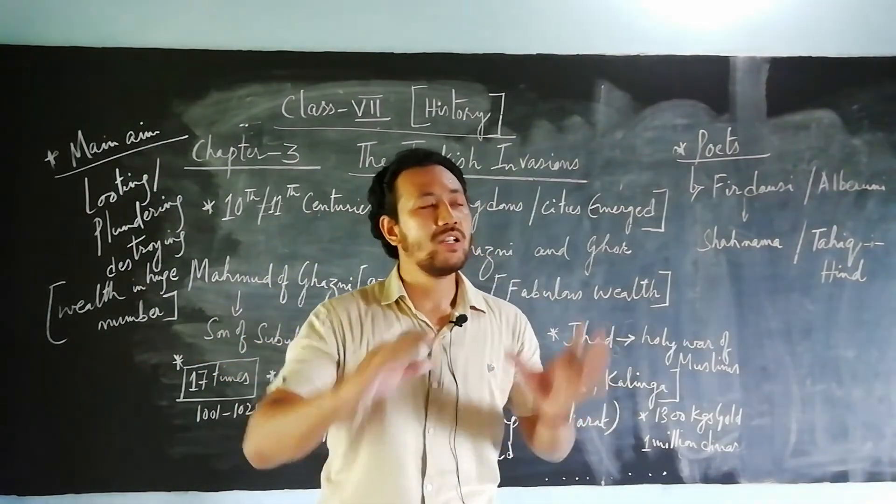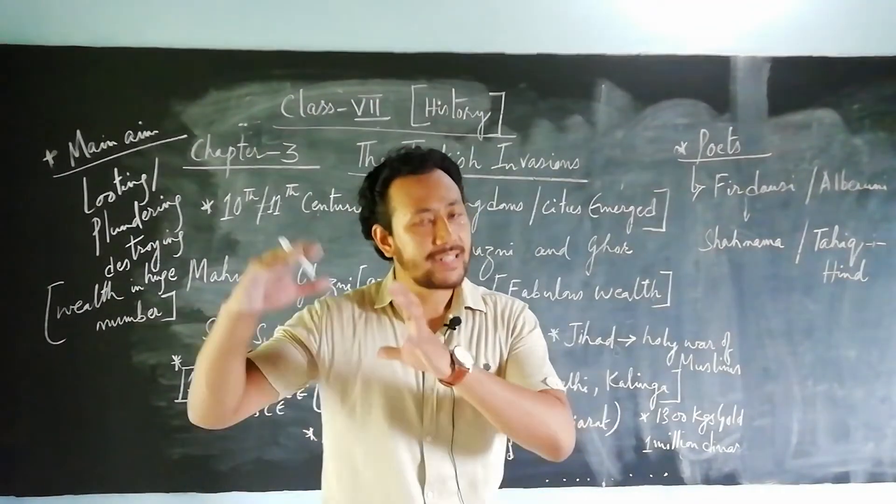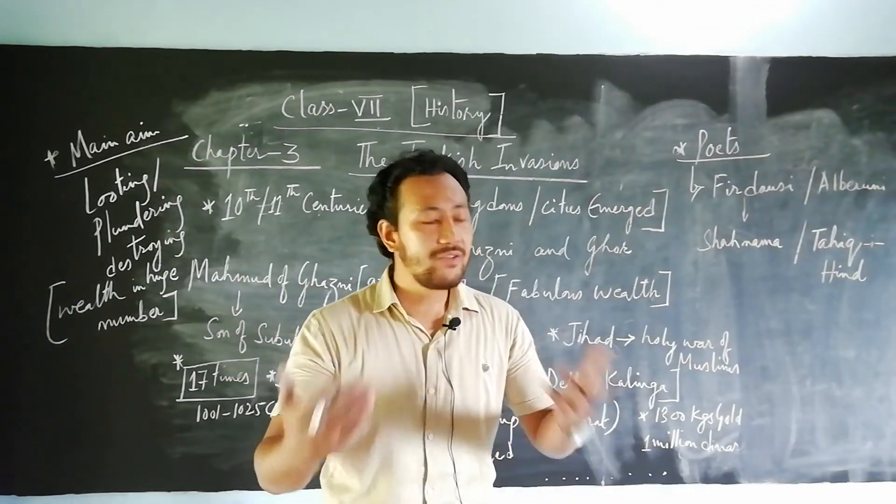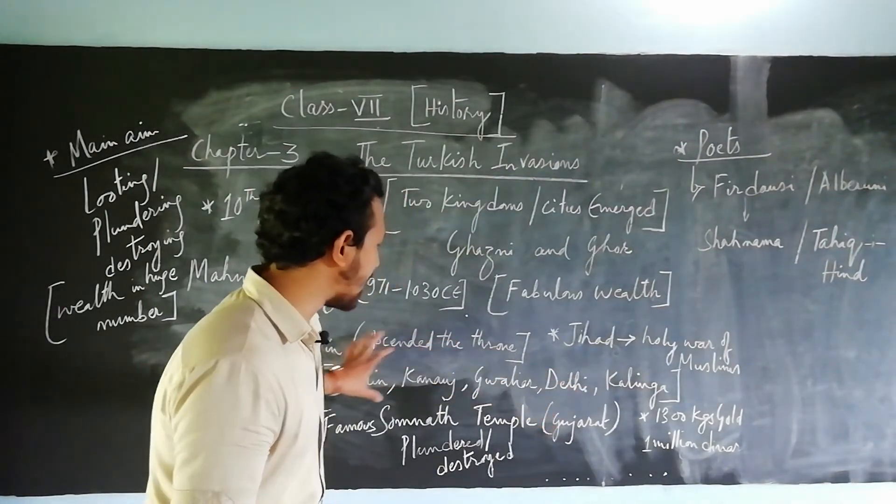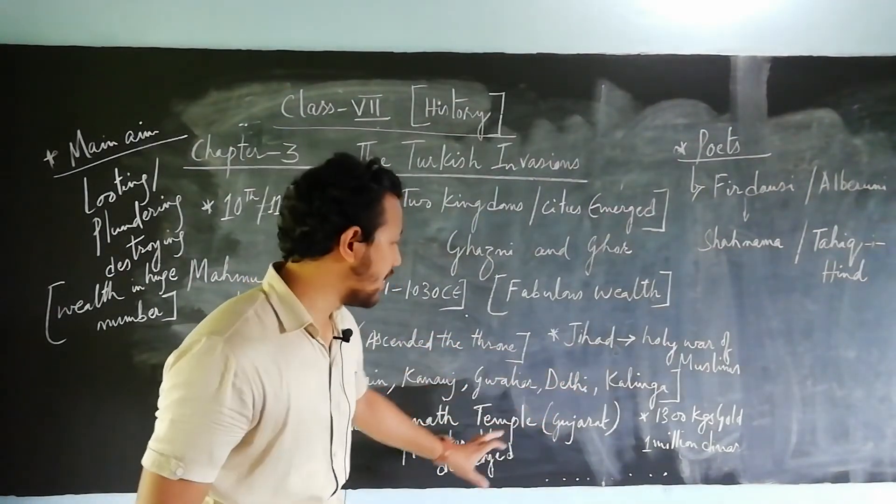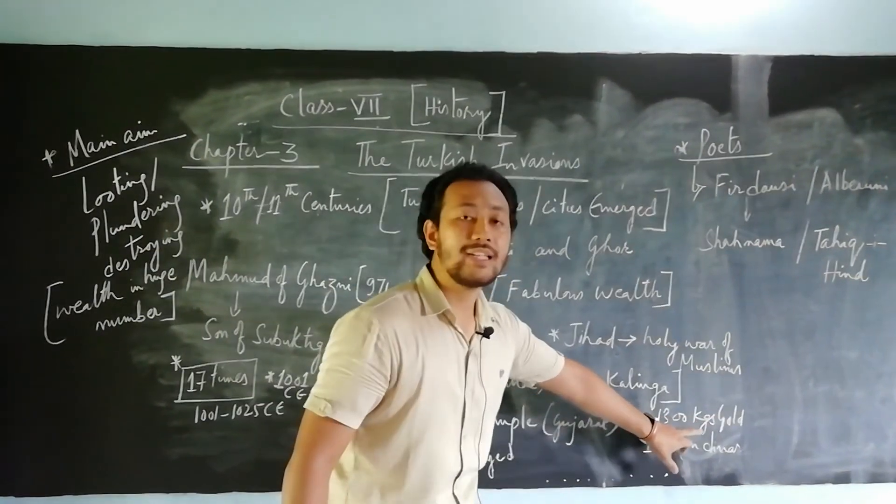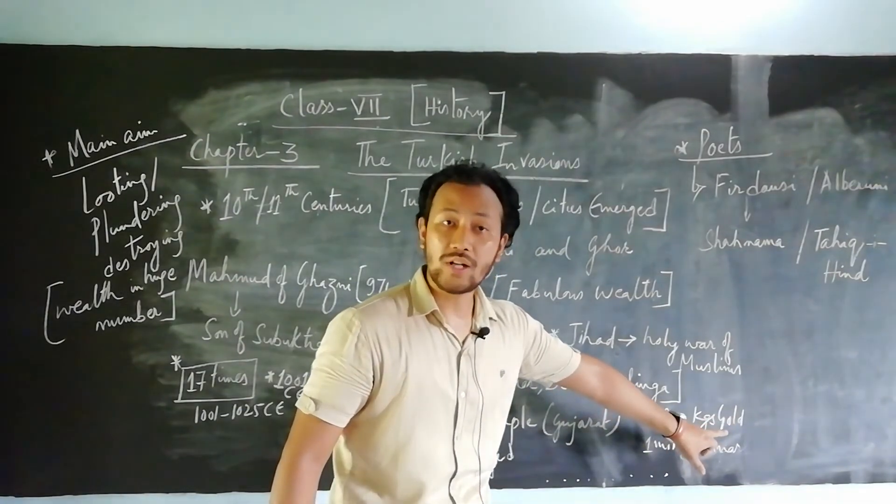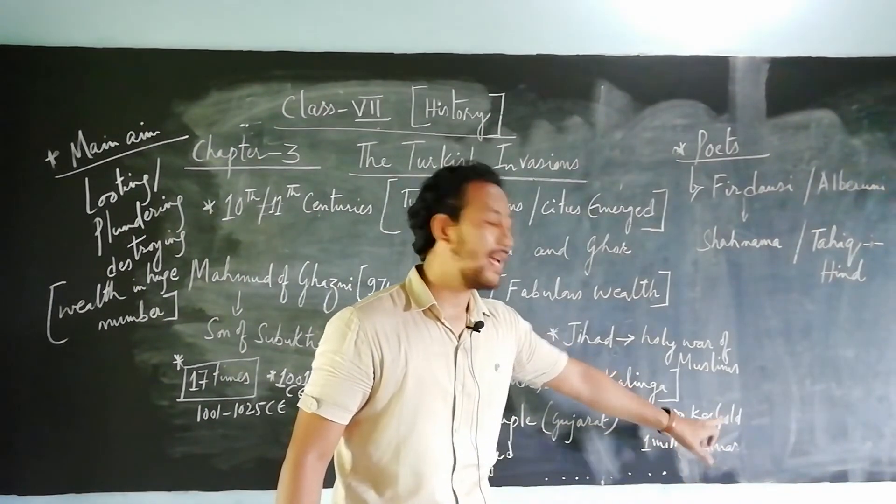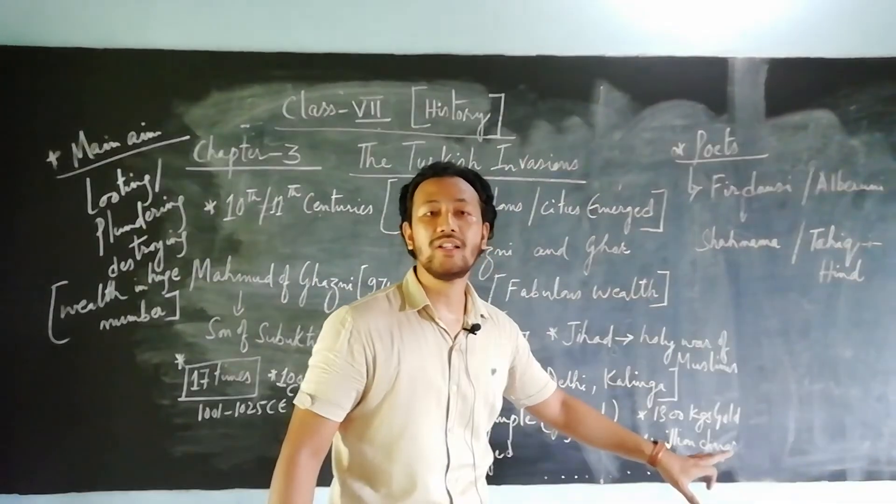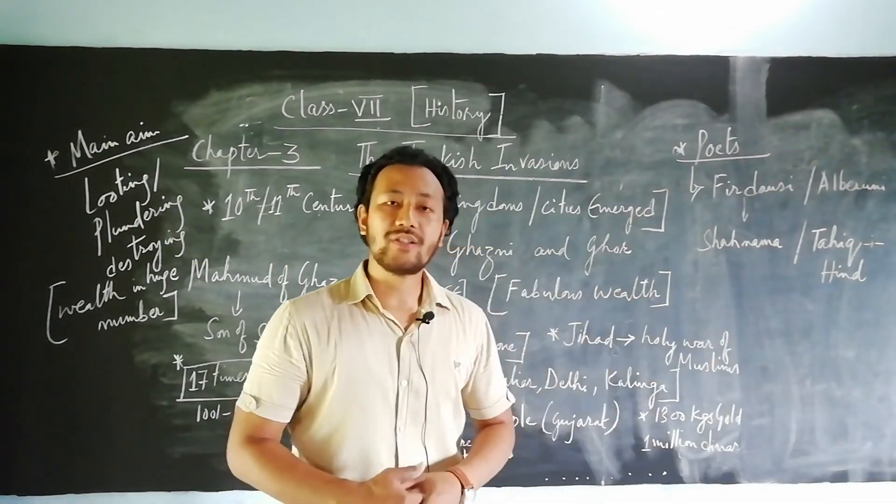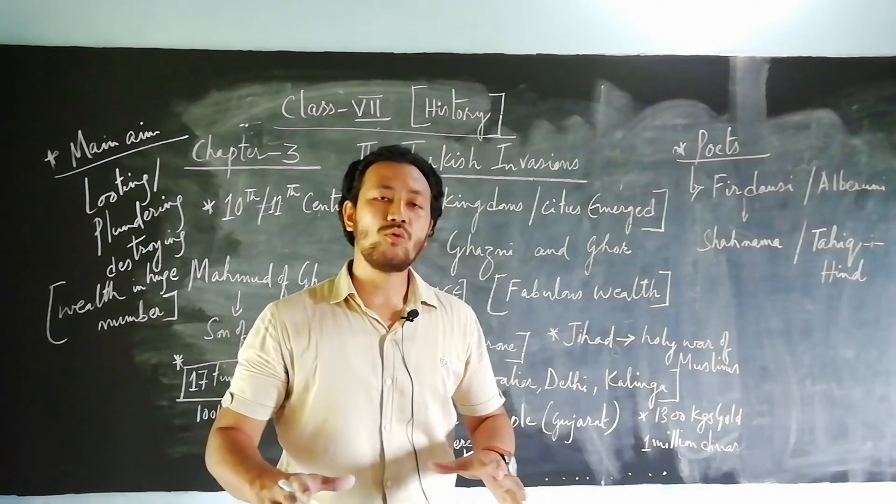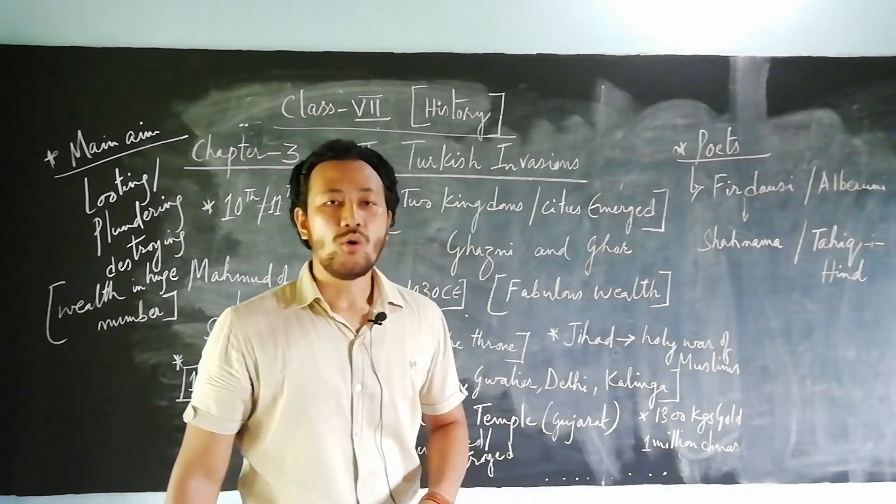His aim was just to come to India and take whatever he could—wealth and booties. After visiting these cities, he took 1,300 kilograms of gold and 1 million dinars. Dinar is the name of the currency of the Arabian countries. That kind of amount was usually taken by this ruler.